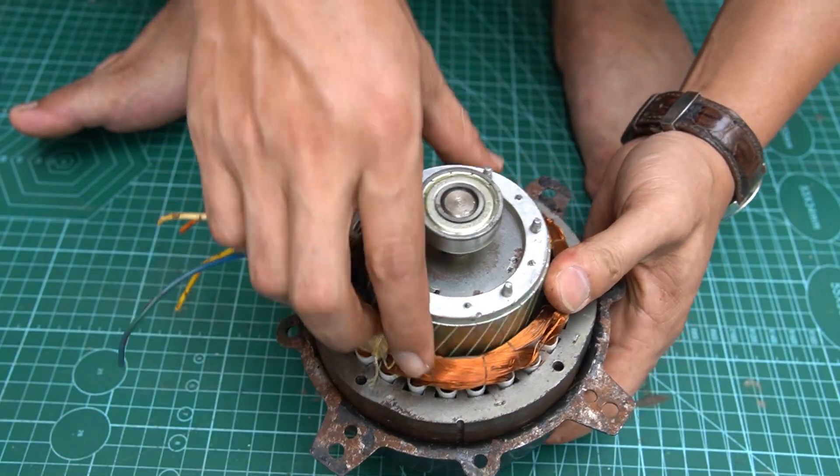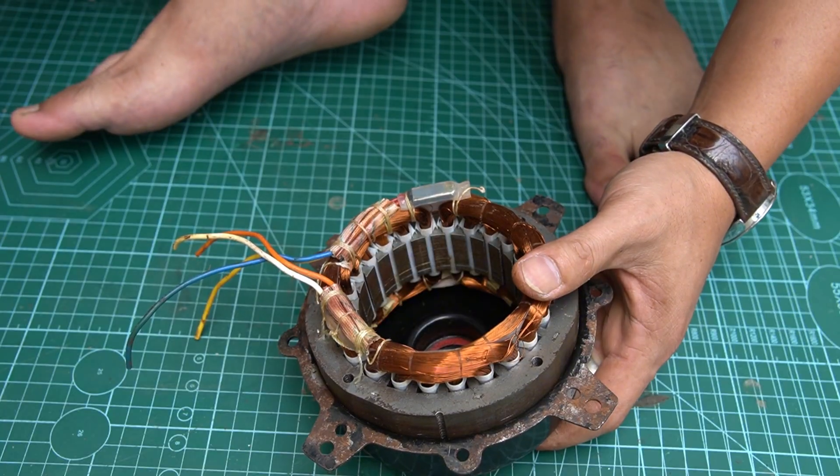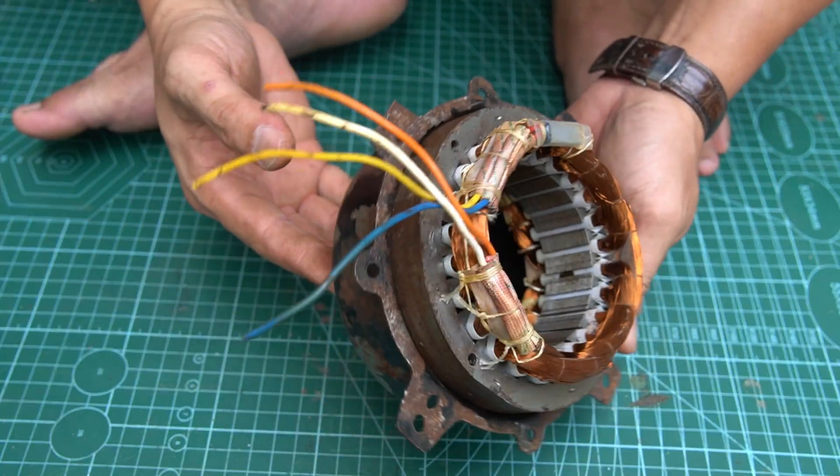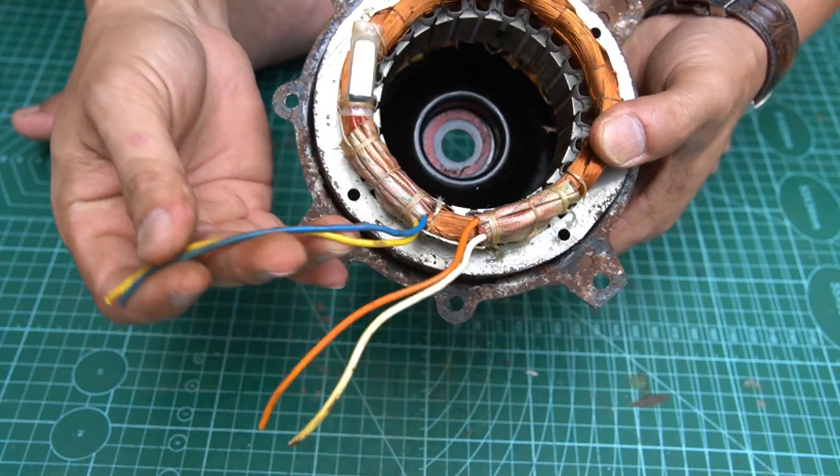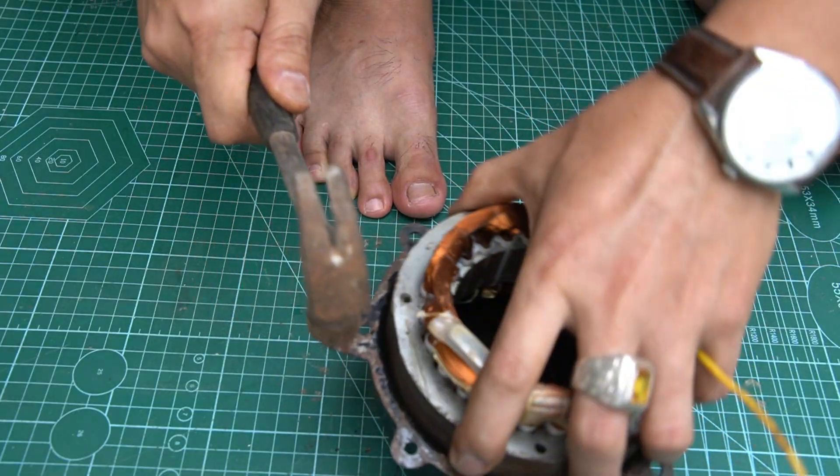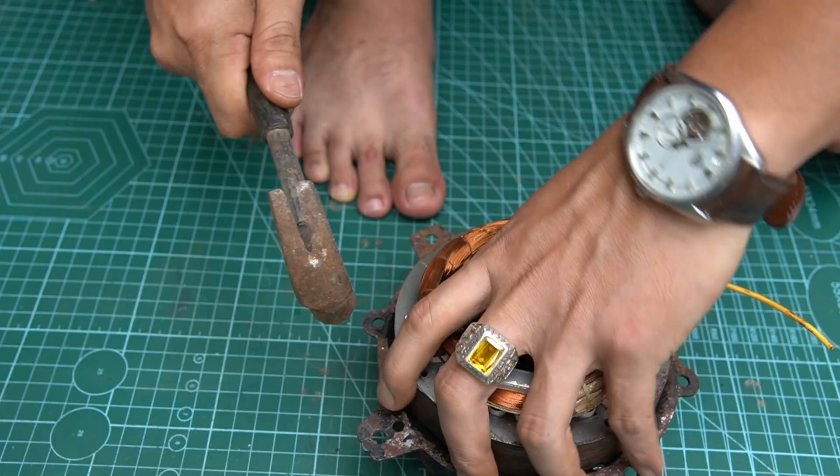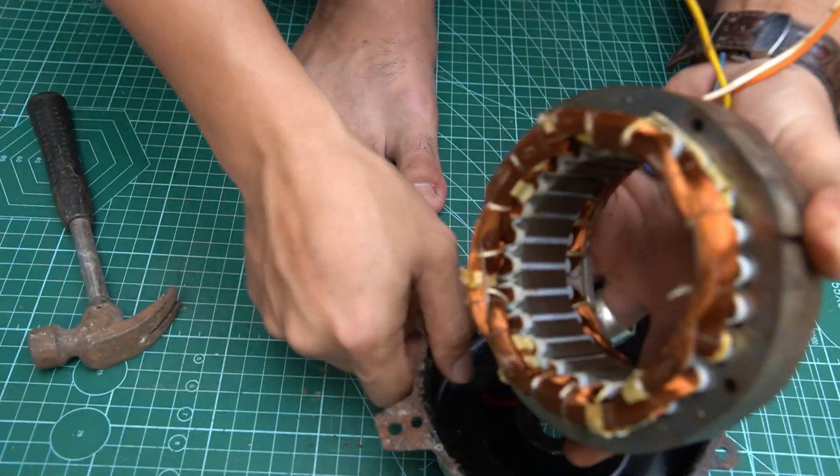Next, I'll remove the rotor shaft from the motor. Now only the outer casing and the stator coil inside are left. I use a small hammer to remove the stator coil from its casing.